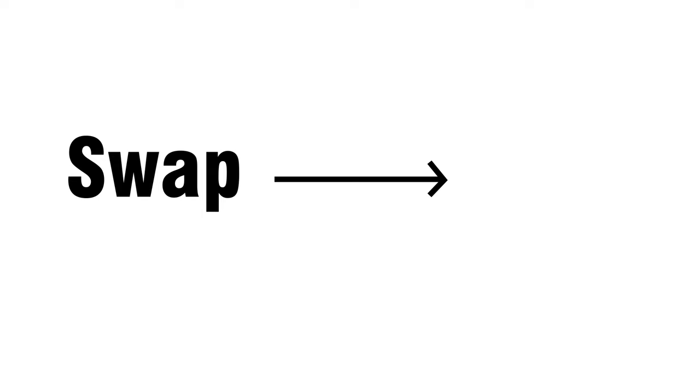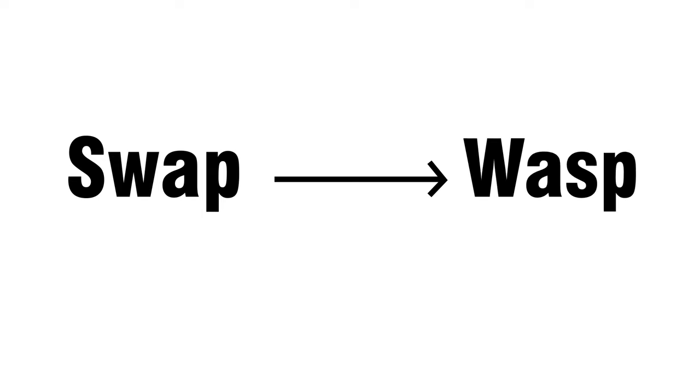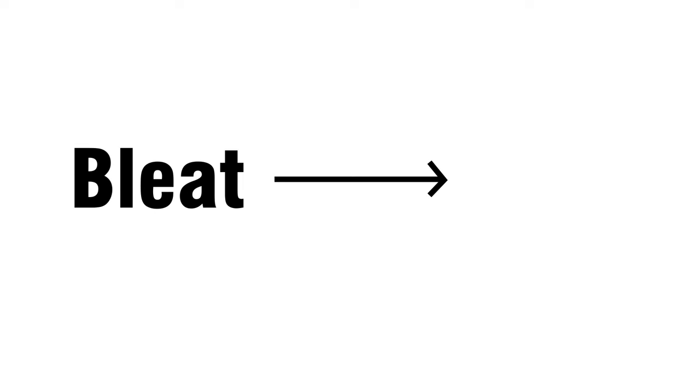Swap. This is an insect. Answer is wasp. Table. This is an item of furniture. Answer is table.